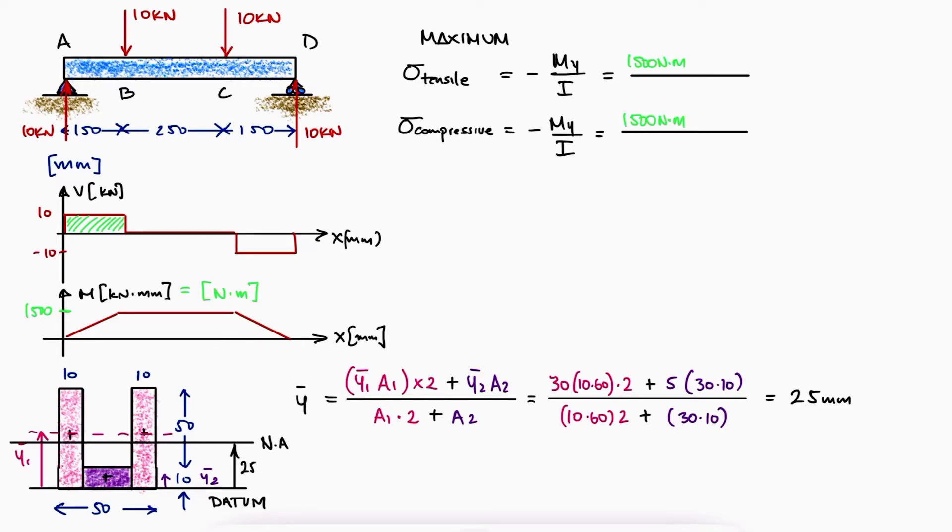With the neutral axis location, we can find the Y distance from the neutral axis to the top and to the bottom. Since the internal moment is positive, we know that the top surface of the beam will be under compression.